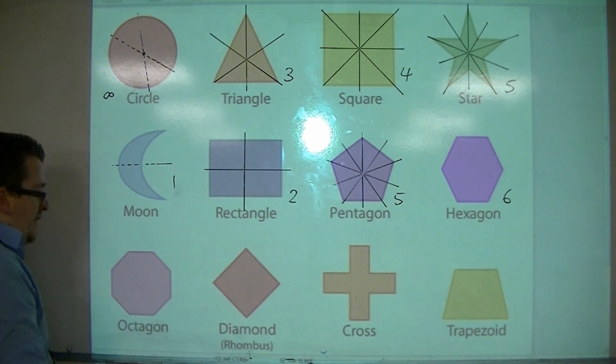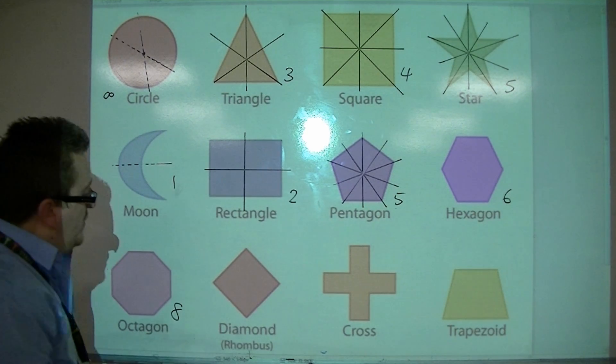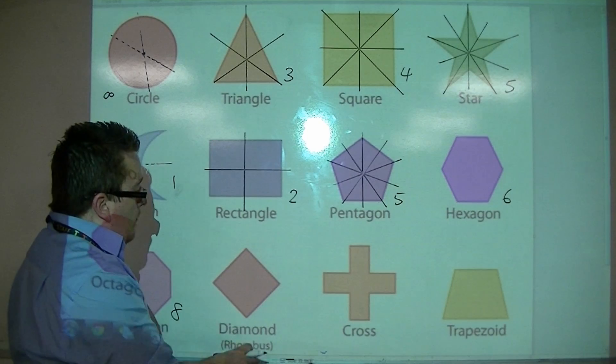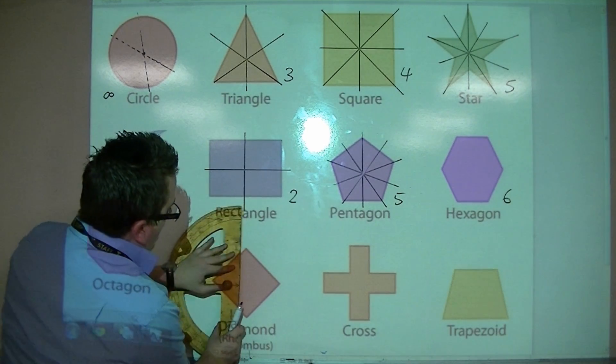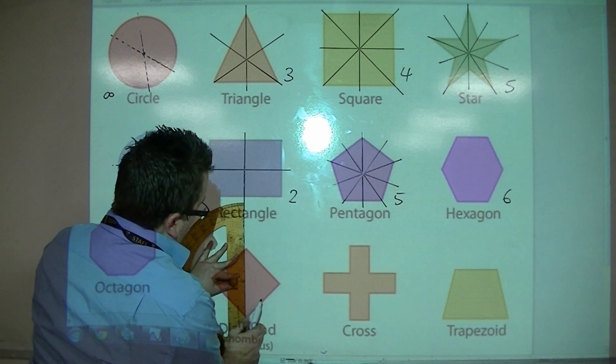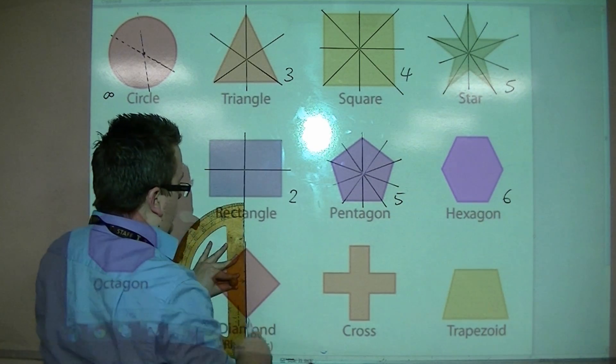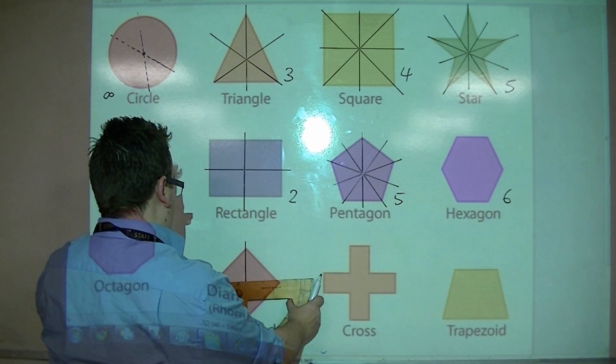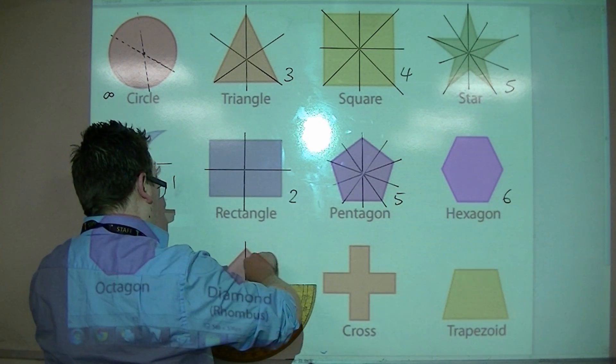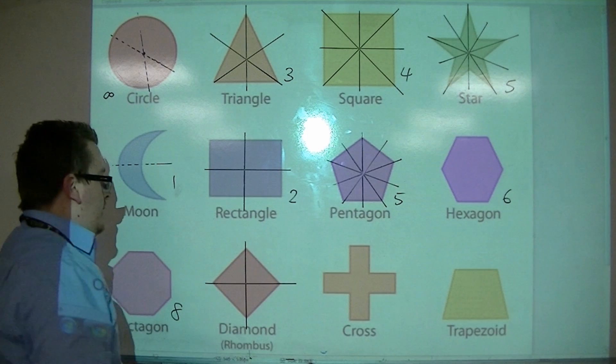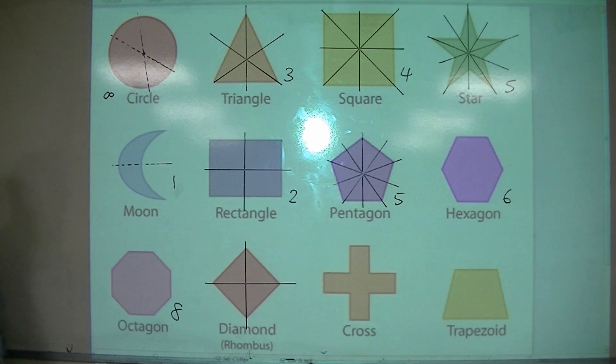So there's going to be six lines of symmetry for the hexagon. There's going to be eight lines of symmetry for the octagon. The diamond, or a rhombus. Well, for the rhombus, you're going to have one line of symmetry going down that way, and one line of symmetry going that way. So that works out for the rhombus.